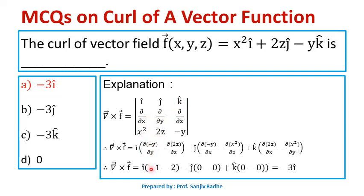Here, ∂(−y)/∂y = −1 and ∂(2z)/∂z = 2. ∂(−y)/∂x = 0 and ∂(x²)/∂z = 0. ∂(2z)/∂x = 0 and ∂(x²)/∂y = 0. So the result is (−1 − 2)î = −3î. Curl of F̄ is −3î, so option A is correct.